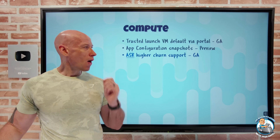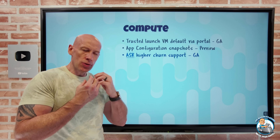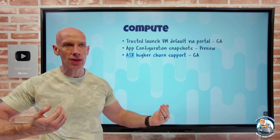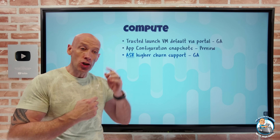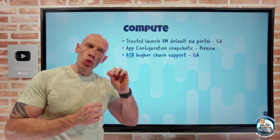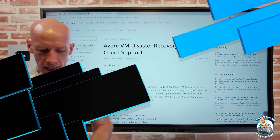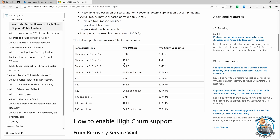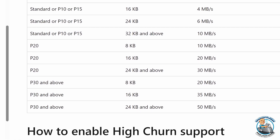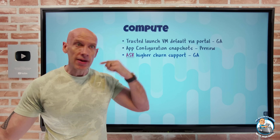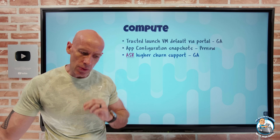Azure Site Recovery now has higher churn support. ASR helps us replicate virtual machines to another zone or region. The higher churn applies both at the VM level and per disk level. At the VM level, they've increased it to 100 megabytes per second. At the per-disk level, the limit has increased to 50 megabytes per second for P30 or above. This is super useful where you have high rates of disk change, such as a database workload — now you can still protect it with Azure Site Recovery.